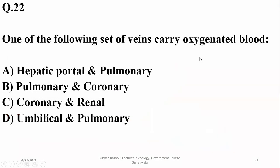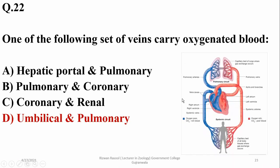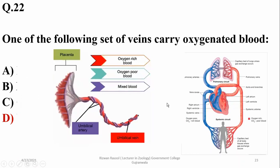Which set of veins carries oxygenated blood? Oxygenated blood is carried by umbilical veins and pulmonary veins. Most veins in the body carry deoxygenated blood, and arteries usually carry oxygenated blood. Exceptions include the pulmonary artery and pulmonary veins, as well as the umbilical artery and umbilical veins.